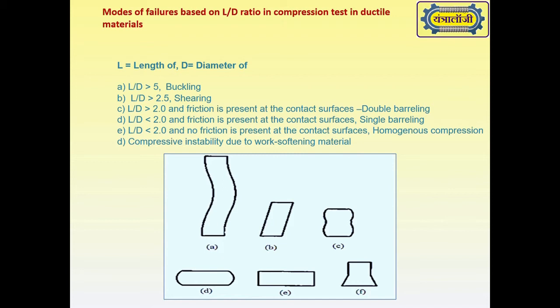If L/D is less than 2.0 and no friction is present at the contact surfaces, there will be homogeneous compression up to a coin shape. If there is work softening of the material, there will be unstable compression.